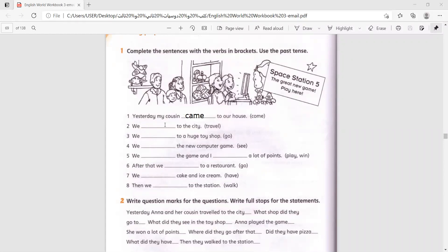We blanked to the city. Traveled. We blanked to a huge toy shop. Go. What is the past verb of go? Excellent, it is went.